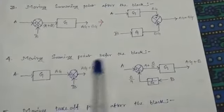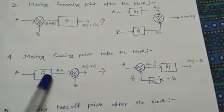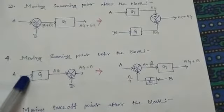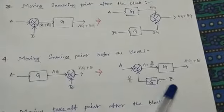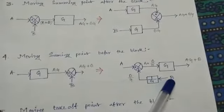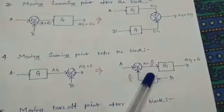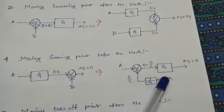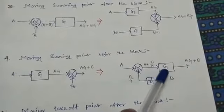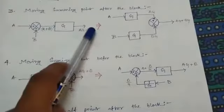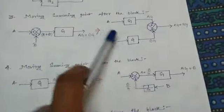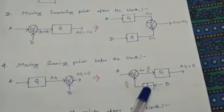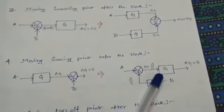Rule number four: moving a summing point before the block. In this case, if we want to move the summing point before the block, we have to multiply signal b by 1/g — that is, we divide b by the system gain g. So when moving after the block we multiply by g, and when moving before the block we divide by g.